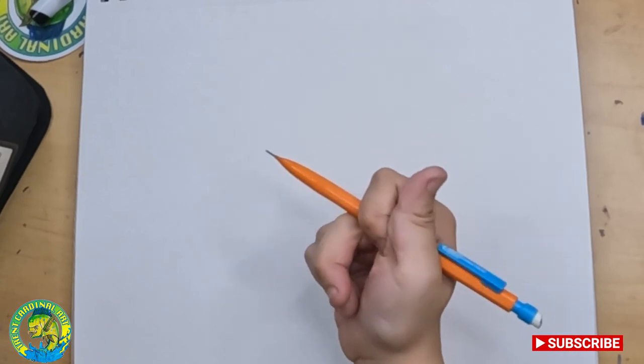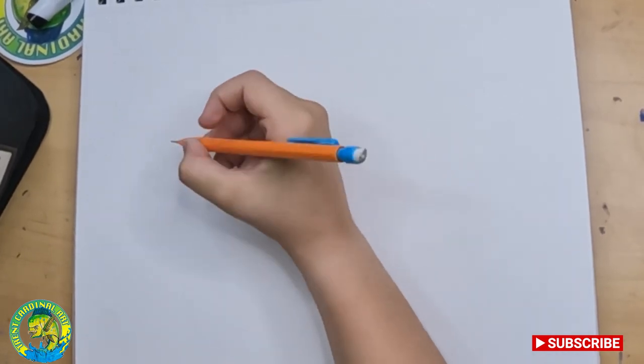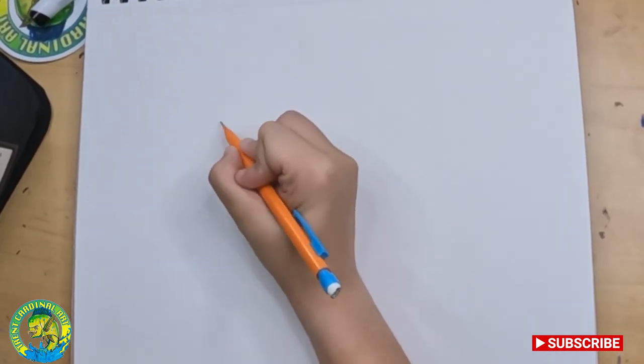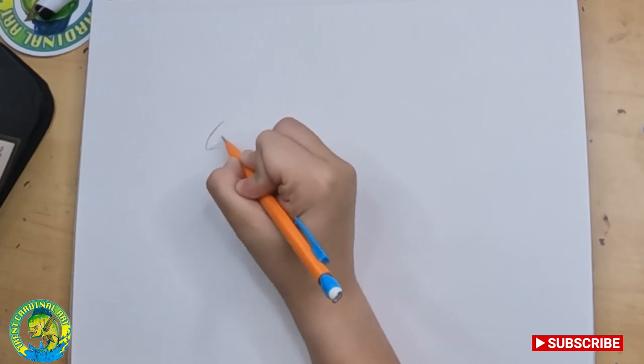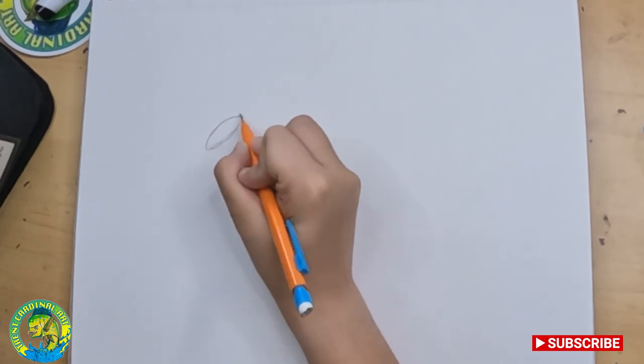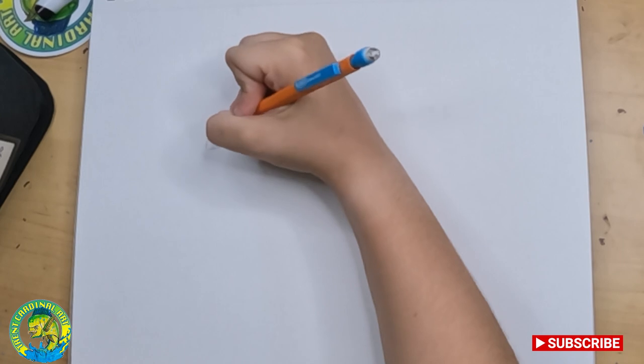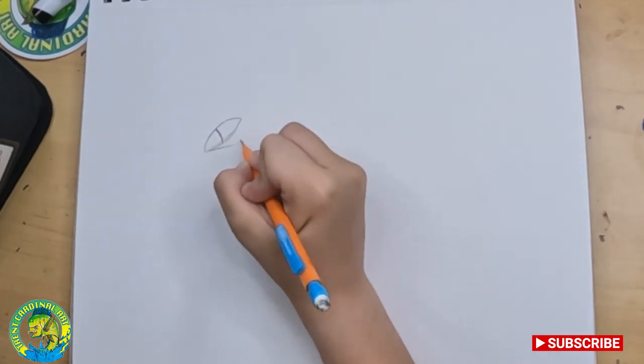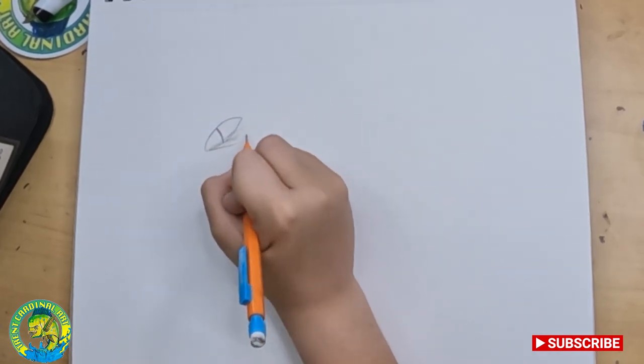Alright, first I'm gonna draw for our brand new dragon is going to be the eye. So we're gonna make like an oval shape with a line in the middle. Then you can make lines under it.